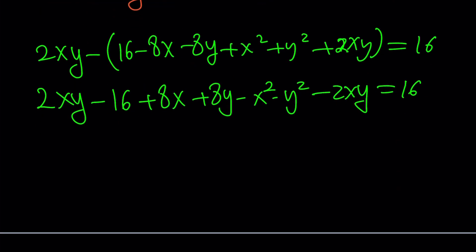2xy minus 16 plus 8x plus 8y minus x squared minus y squared minus 2xy equals 16. The only thing that cancels out is 2xy. Notice that x squared and y squared are negative on the left-hand side. So let's put everything on the right-hand side. x squared plus y squared minus 8x minus 8y plus 16 plus 16, that's going to make plus 32. But I'd like to keep it as 16 plus 16. I'll tell you why in a little bit. And the whole thing equals 0.